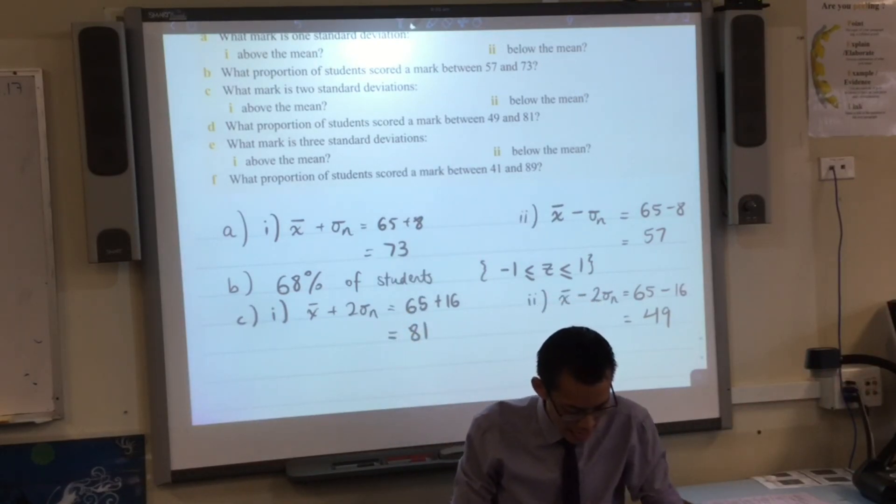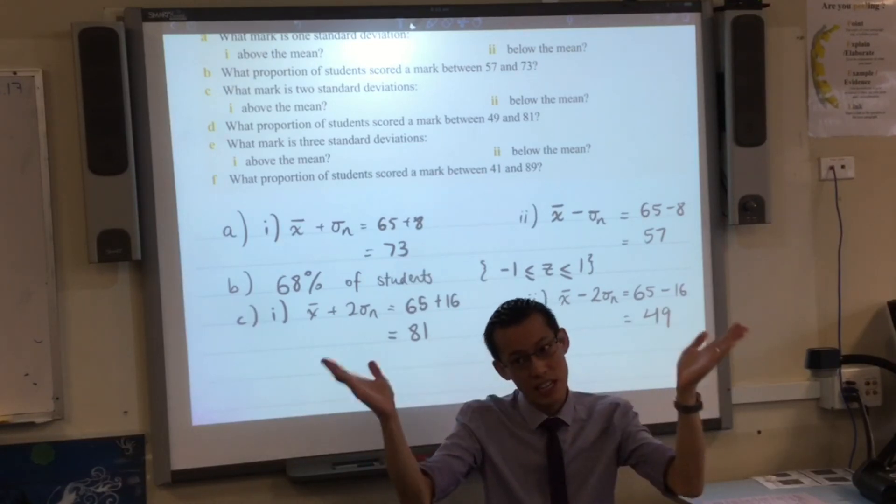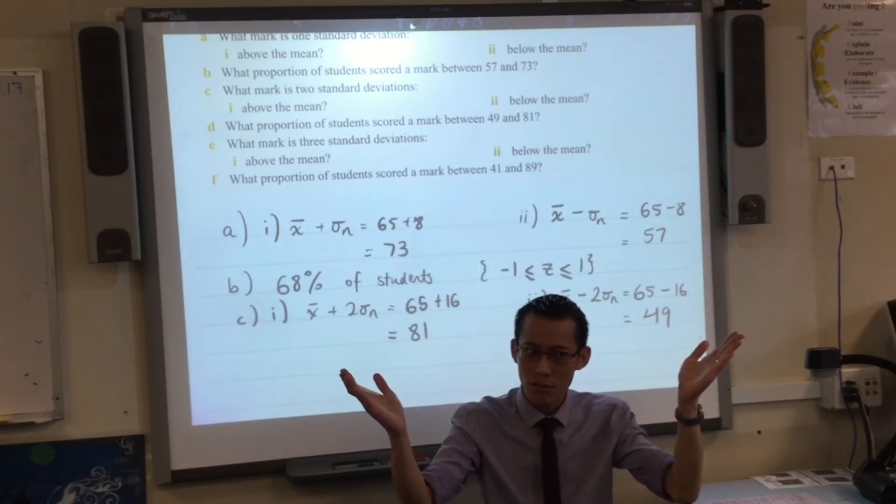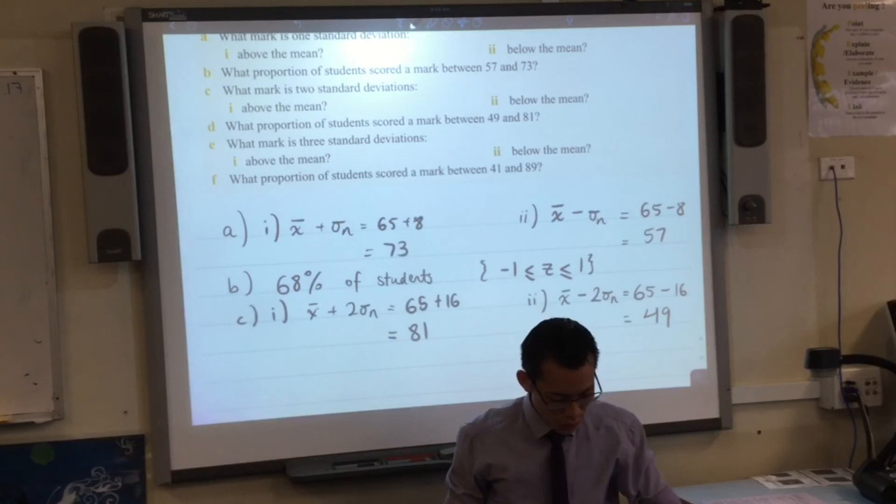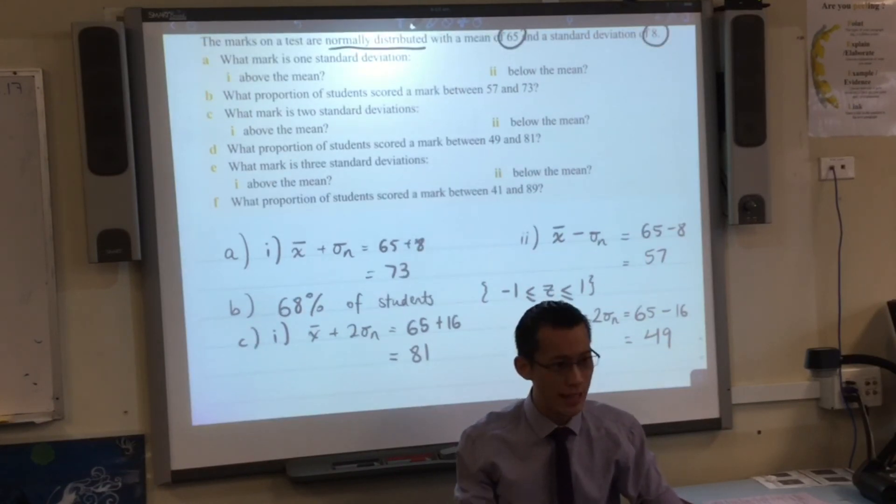Great. Okay. So now we can see between 49 and 81. Much bigger range. So that's why part D asks, what proportion of students is that? It's two standard deviations. So what percentage? 95. Okay. So I'm going to stop there because you get the trend now.